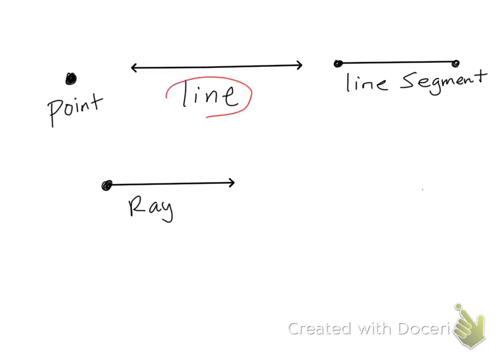A line does not end. It goes on forever in both directions, which is why we have the arrows.